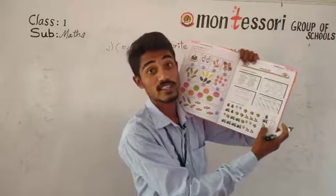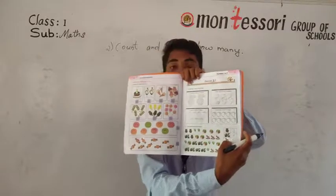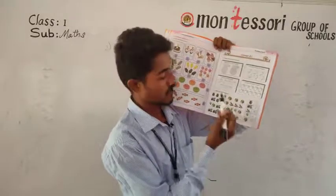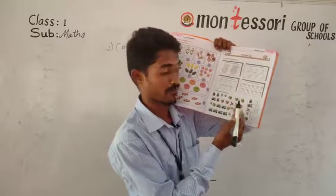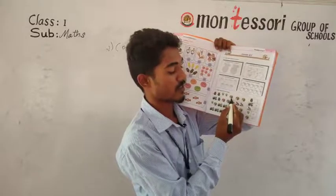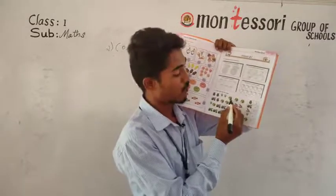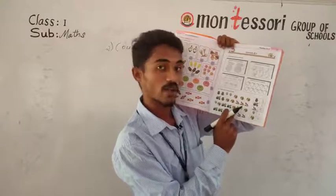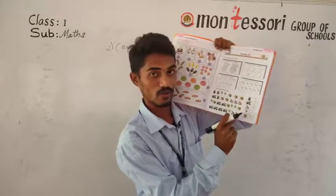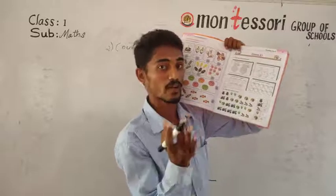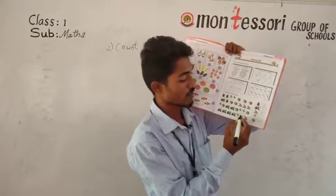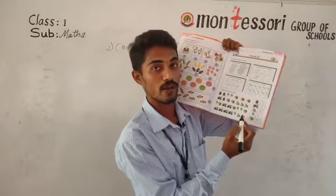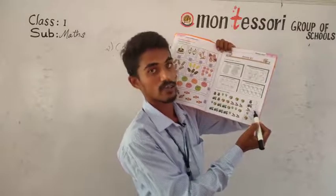Next object: toy horses. In the first line there are no horses. In the second line: one, two, three. Then in the last line: four and five. Total five toy horses. Take the pencil and write five near the horses.